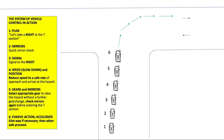The system of vehicle control and action. Step one: plan. Step two: mirrors. Step three: signal. Step four: speed and position. Step five: gears and mirrors. Step six: evasive action, and when safe, accelerate and move through.